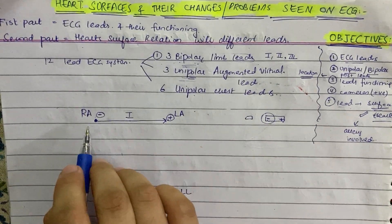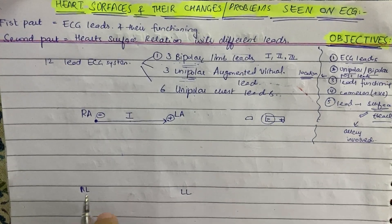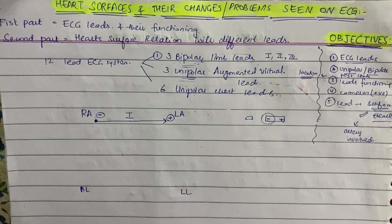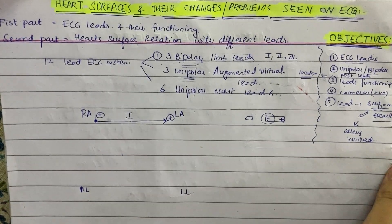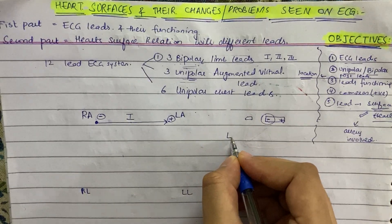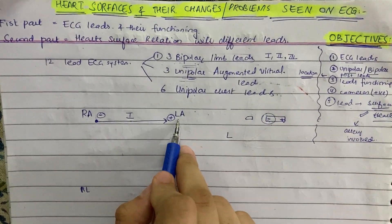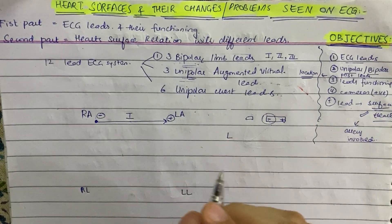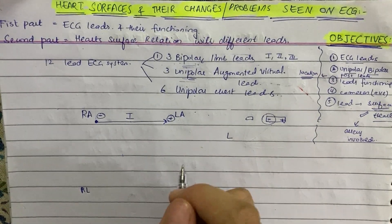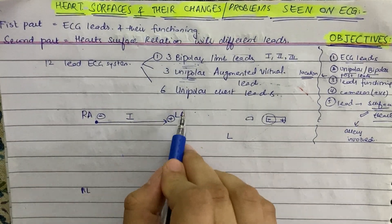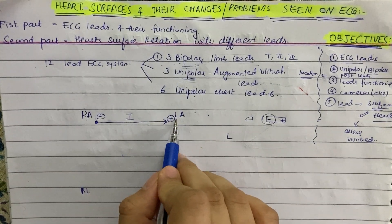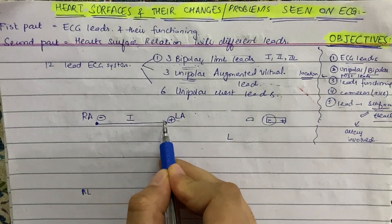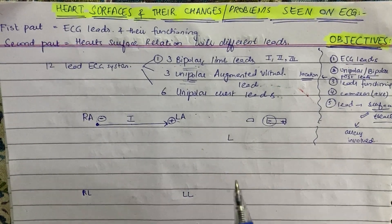To remember which side is negative and which is positive, my teacher Dr. Mubin explained a useful mnemonic: whichever part has more L's in its name is considered positive. Comparing right arm and left arm, the left arm has the letter L, so we make the left arm positive and the right arm negative. That is how the vector moves in Lead 1.